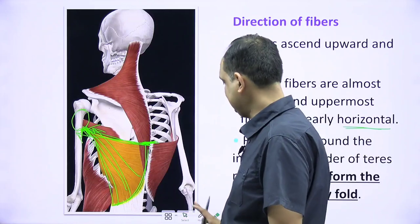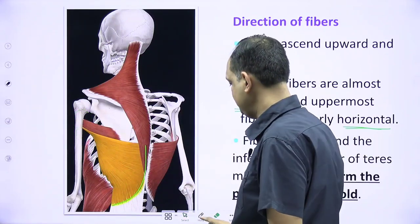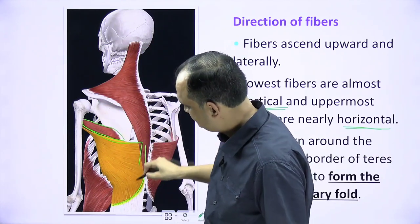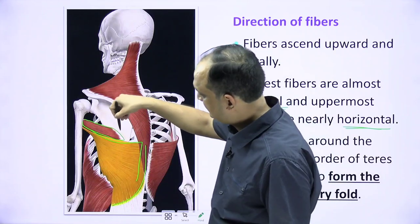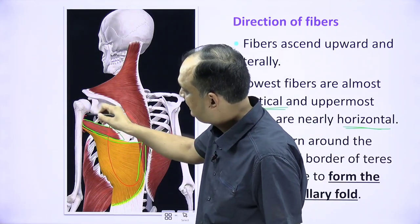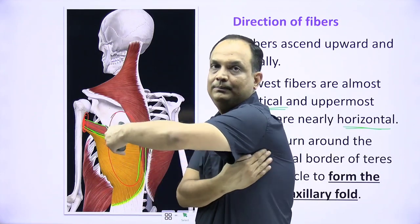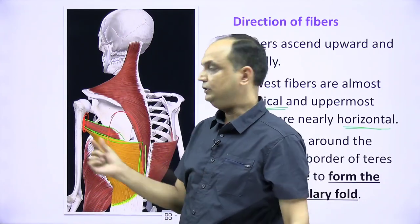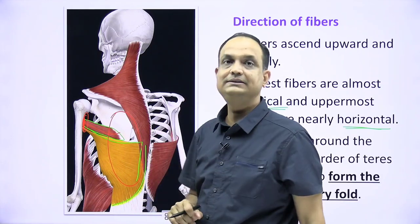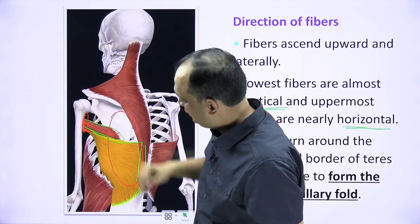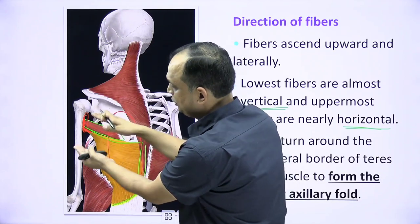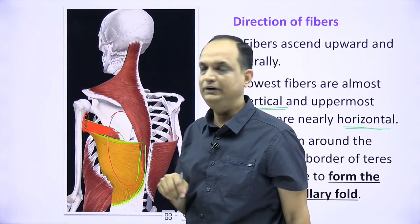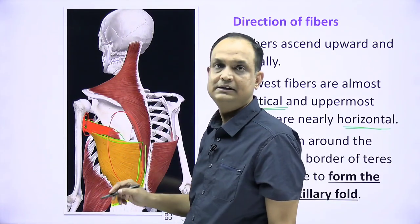In the dissection view, both latissimus dorsi and teres major can be seen coming from the posterior side, crossing to the anterior aspect of the humerus, and contributing to the posterior axillary fold. In the fold, the latissimus dorsi fibers converge and are narrow, with the teres major lying above the latissimus dorsi.